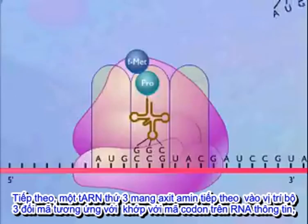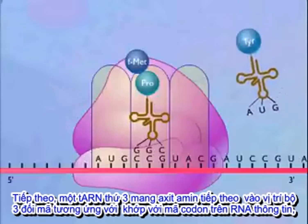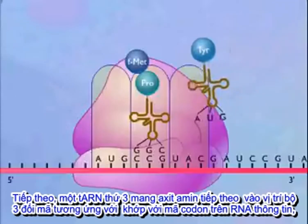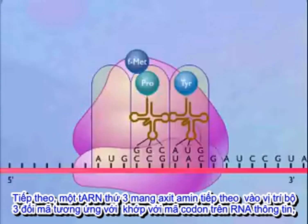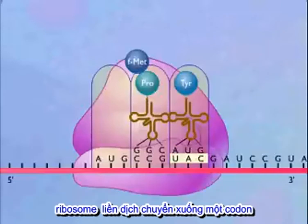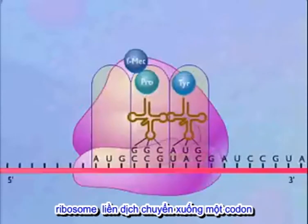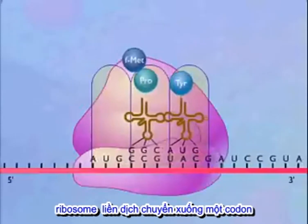A transfer RNA carrying the next amino acid now moves into the A-site, where the anticodon on the transfer RNA matches the codon on the messenger RNA. The ribosome shifts down by a distance of one codon.